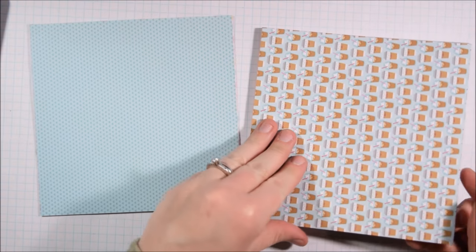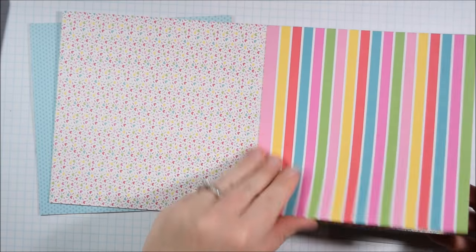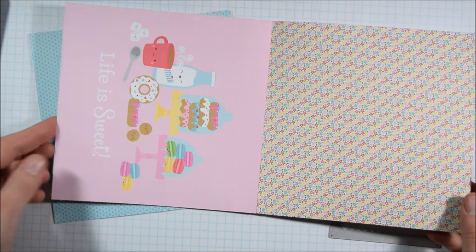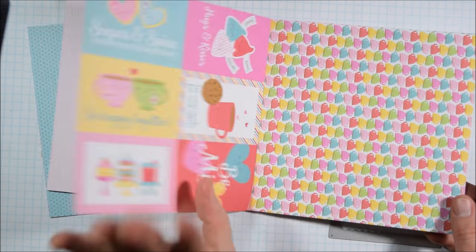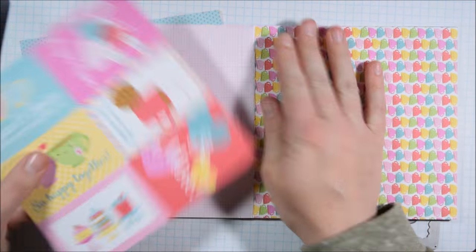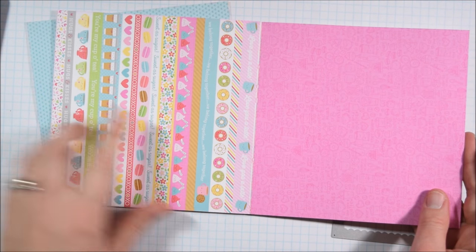No stamps, no ink, just a paper cutter, adhesive, and the paper pad. That's because in the Doodlebug collection, they have a lot of little pre-printed things that are journaling cards in the large collection, but are like perfect little sentiment blocks in the 6x6 pad.